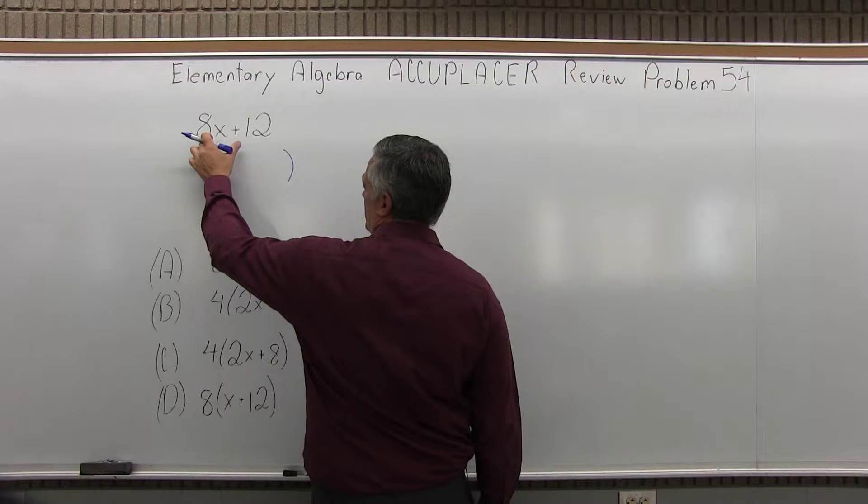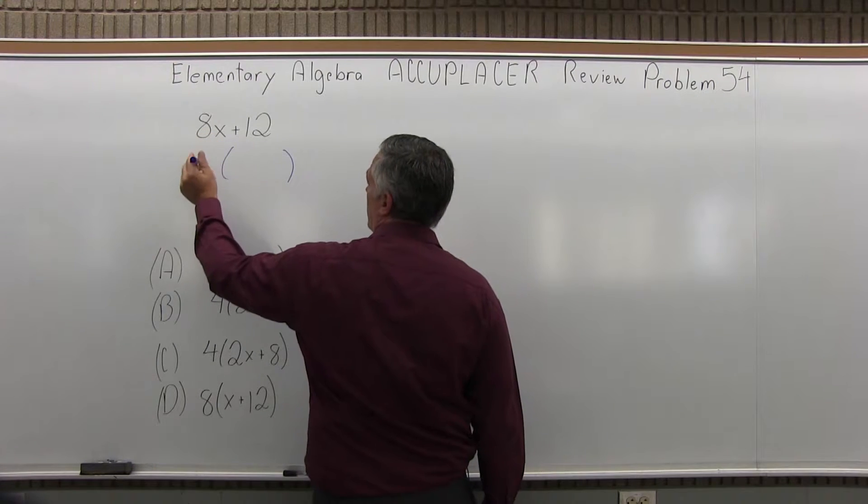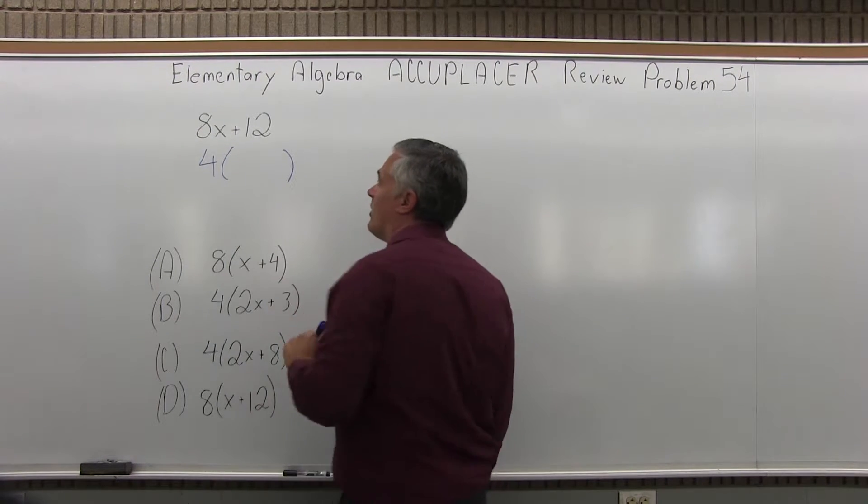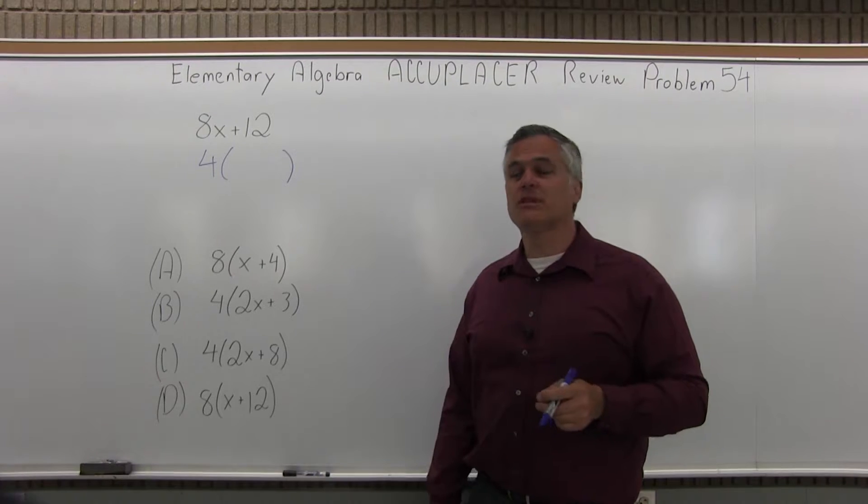So what I have to do is see what's in both 8x and in 12, and the answer is 4. Both 8x and 12 are something times 4.